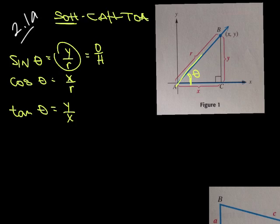Cosine of theta is X over R, or what we're going to use is adjacent over hypotenuse.